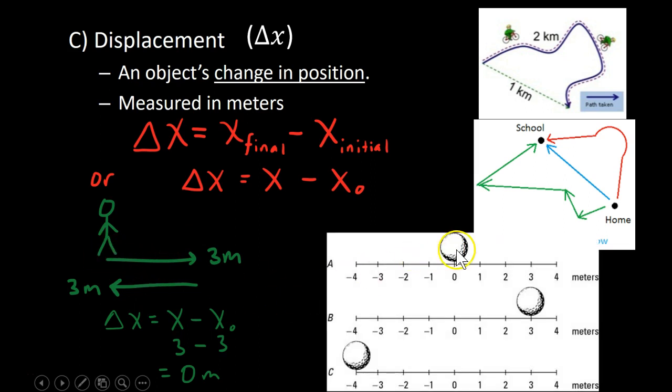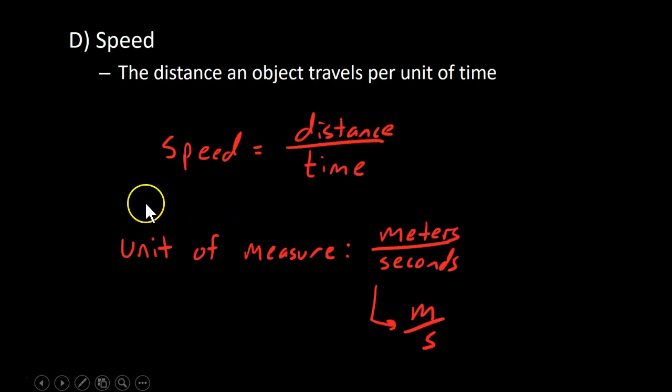One last thing. The ball starts right here. Then it rolls to the right. It rolls to the left. The initial is zero. The final is this minus four. So what's the displacement? It would be minus four or four to the left. It doesn't matter what happens in between because displacement only cares about the beginning and the end.